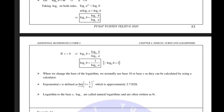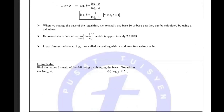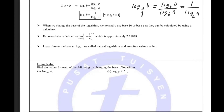But there is a shortcut. If I have log base a of b, I can introduce any new base. What if the new base is b itself? Then log_b(b) is 1, and this becomes 1 over log_b(a). So log base a of b equals 1 over log base b of a — we just interchange a and b. For example, log base 2 of 3 is just 1 over log base 3 of 2.